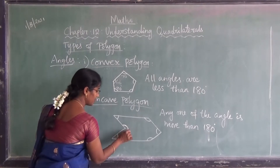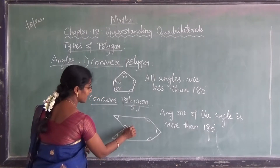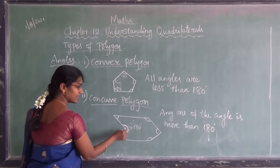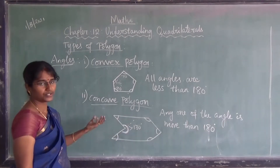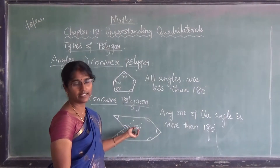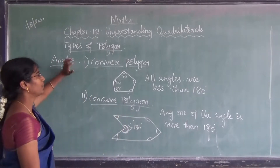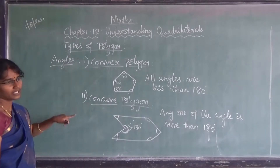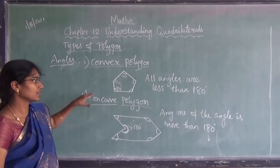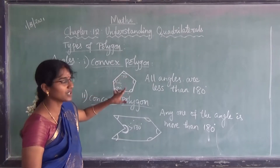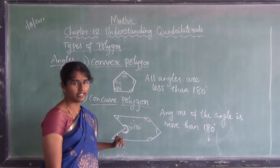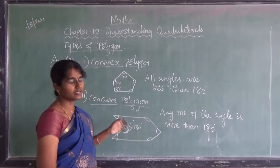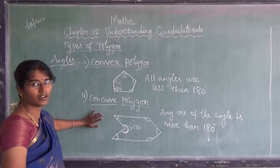This angle measured here must be greater than 180 degrees because this angle is more than a straight line, which is 180 degrees. So types of polygon based on angles: first is convex polygon — all angles must be less than 180 degrees; next is concave polygon — any one of the angles is greater than 180 degrees.